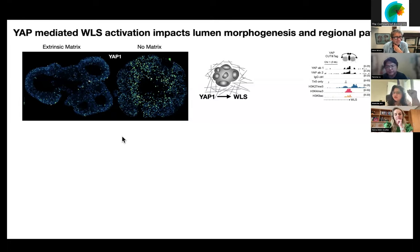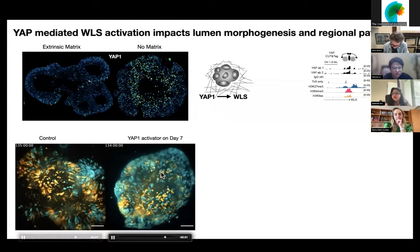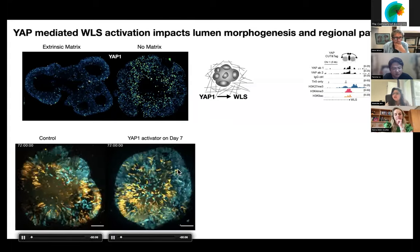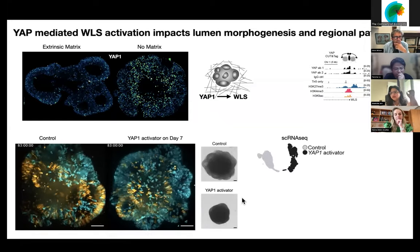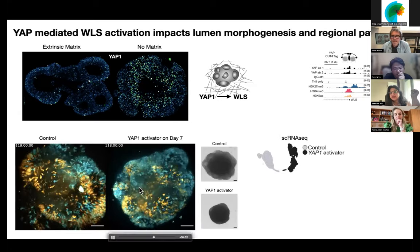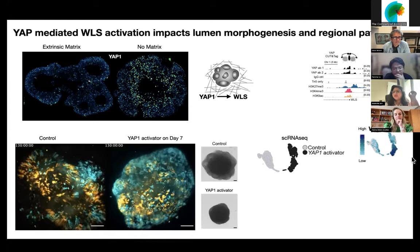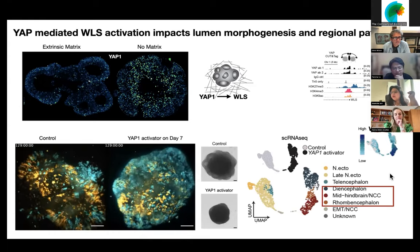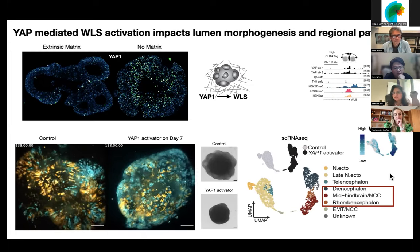We stained for YAP1 in our organoids and found it is indeed very high in the no-matrix organoids. We also did a CUT&TAG experiment and found that YAP1 does bind to the Wntless promoter region in neural tissue as well, suggesting it could be upregulating Wntless expression. We then did our light sheet movies again and found that when we give a YAP activator, although these organoids had made big luminal structures very similar to the Matrigel control condition, upon YAP activation they start collapsing and becoming very rounded — looking like no-matrix organoids in morphology. In single-cell RNA-seq of these activator-exposed organoids, Wntless is indeed very high in the YAP-activator regions, and the identity of these cells is non-telencephalic.